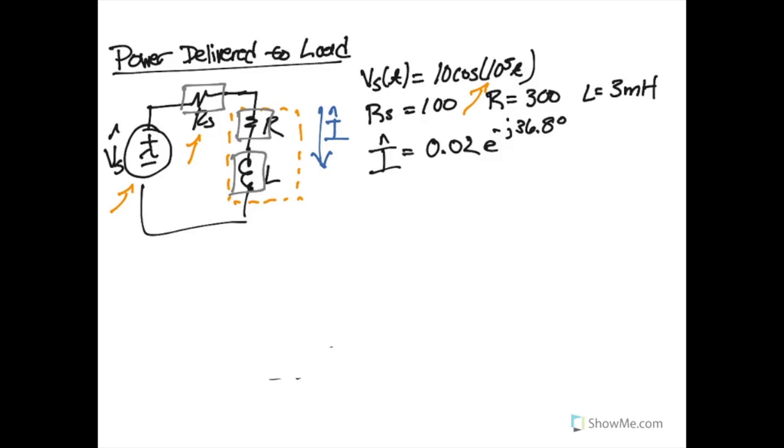Now that we've found the current flowing through this resistor and this inductor, the total power delivered to a load is going to be its average power plus its reactive power. For any sort of load, the average power that's going to be delivered is the RMS value of the current times the total amount of the resistive elements. For this particular circuit, we know we only have one resistor here, which is just R.